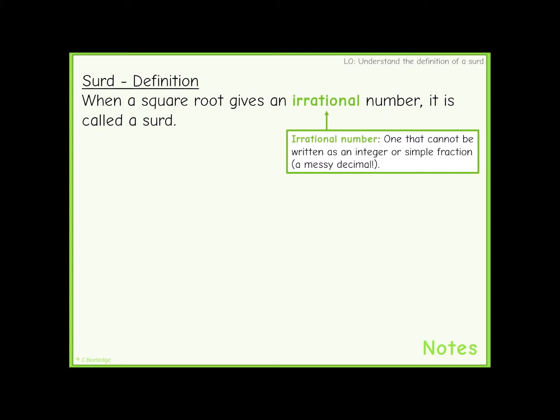So basically, irrational numbers tend to look like very messy decimals. They don't have patterns, they don't recur or repeat, and they carry on forever.